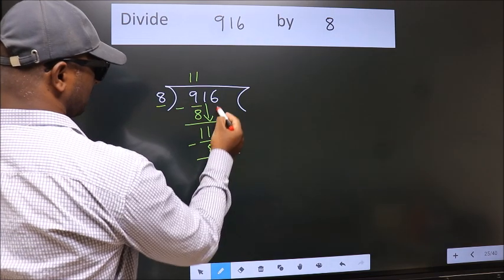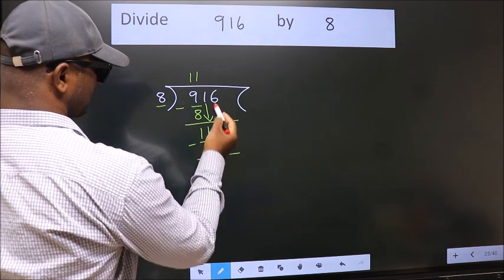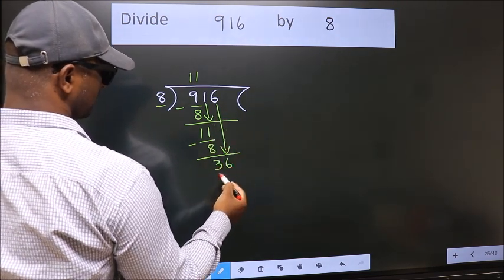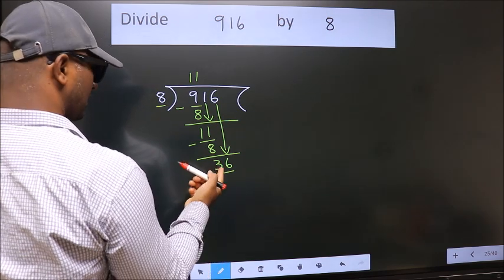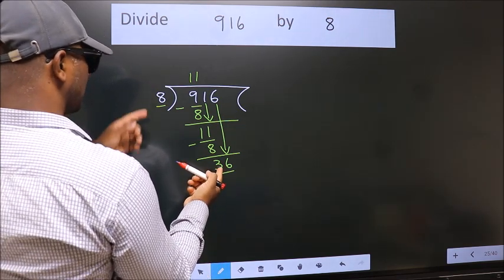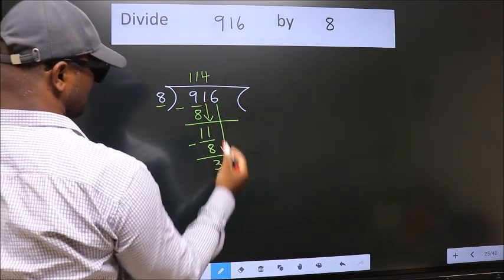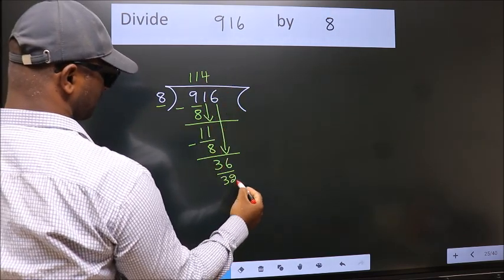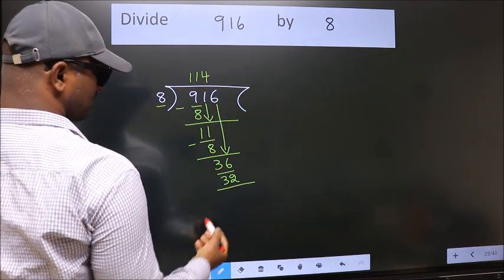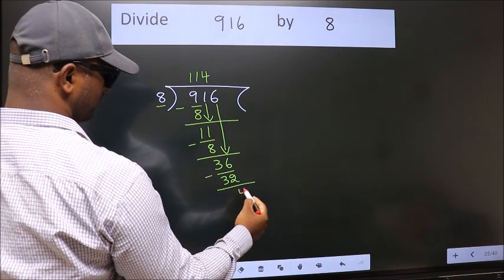After this, bring down the beside number. So 6 down. So 36. A number close to 36 in the 8 table is 8 fours 32. Now we subtract. We get 4.